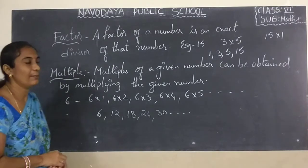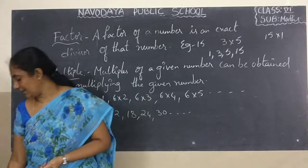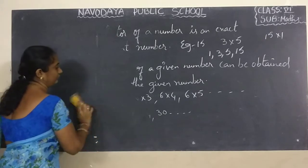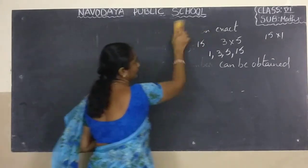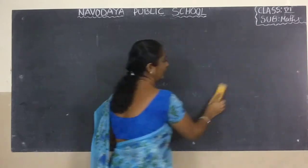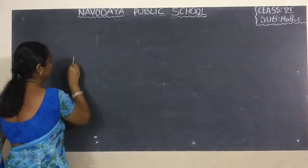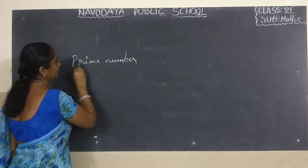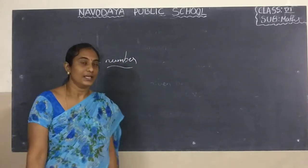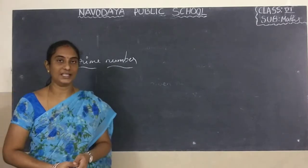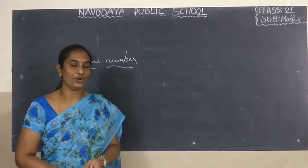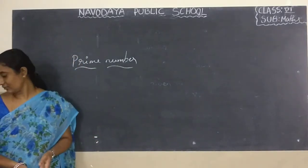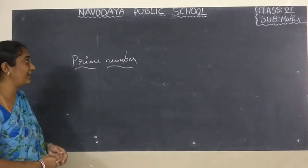The next topic is prime numbers. What is the definition for prime numbers? A prime number is a whole number. It has only two factors: one and itself.